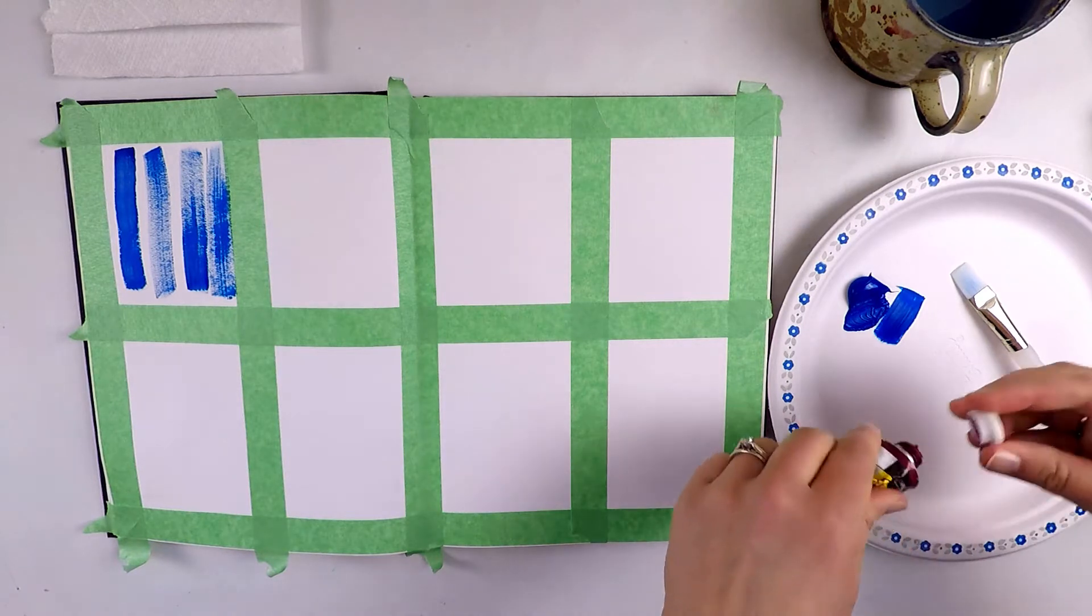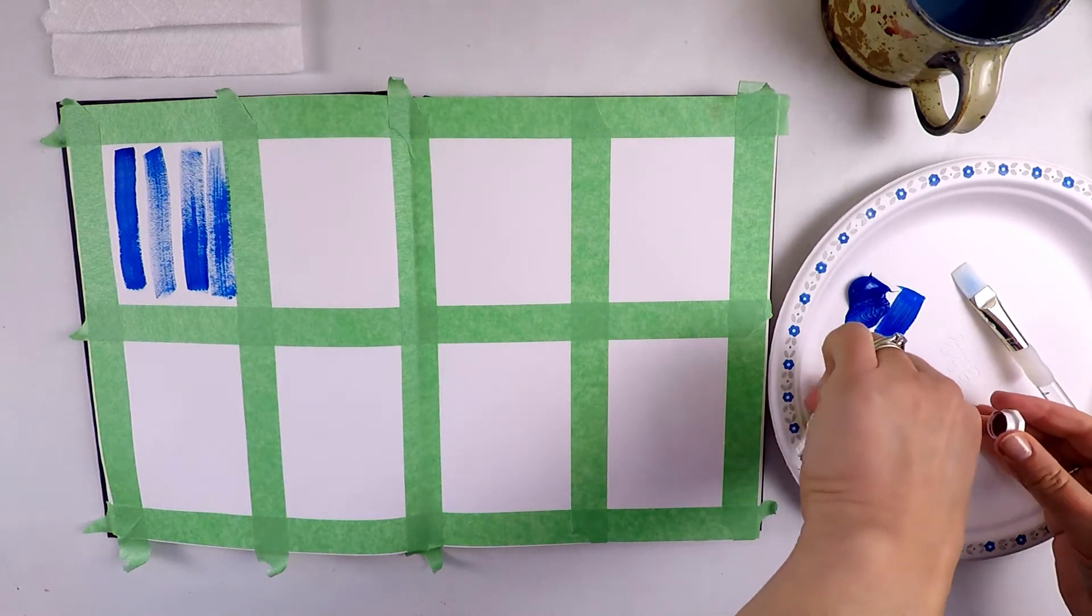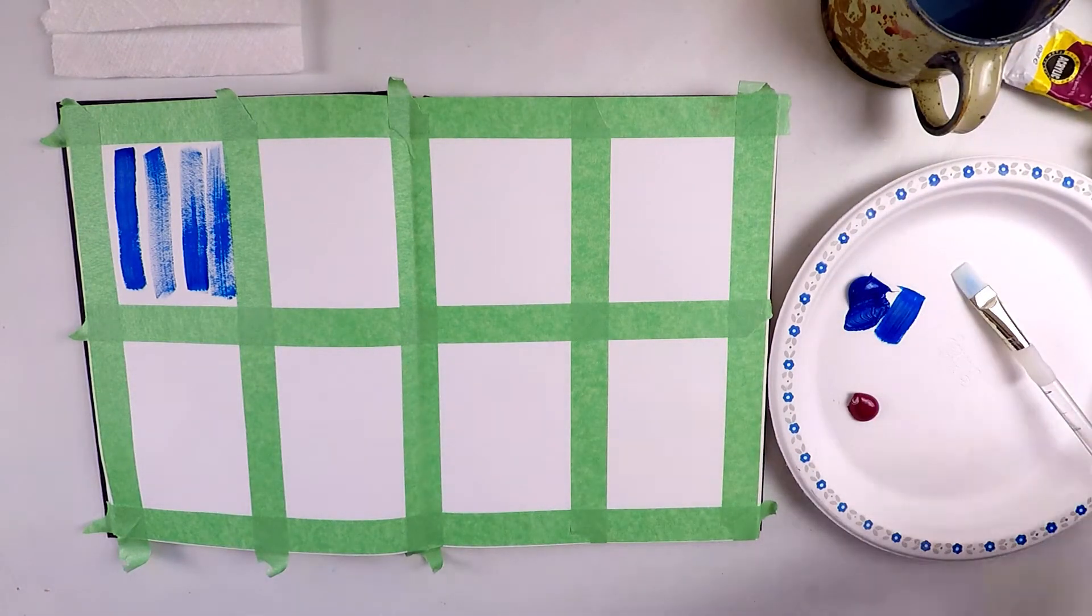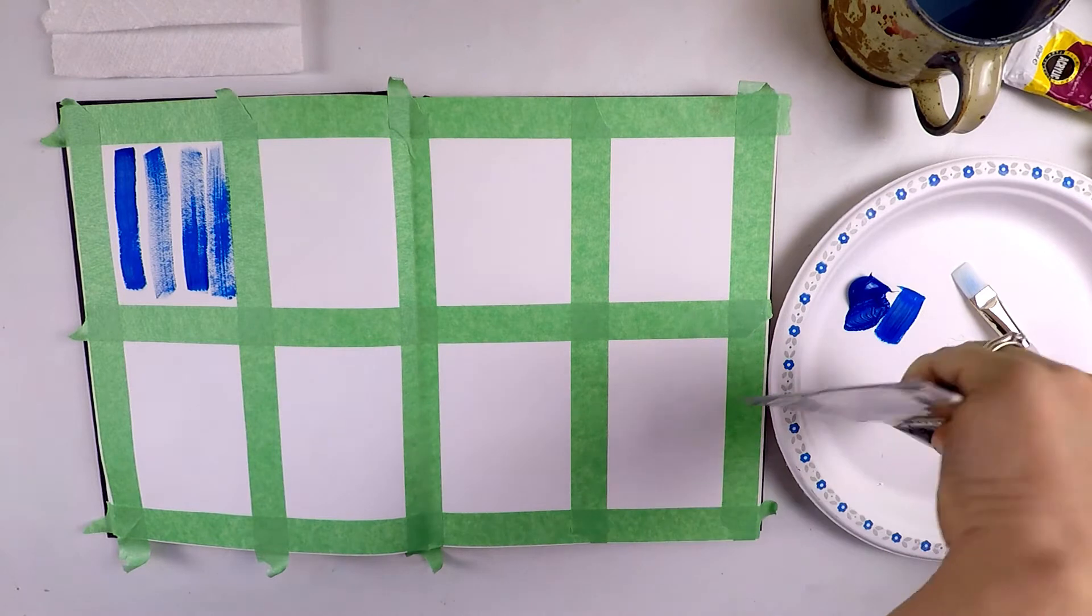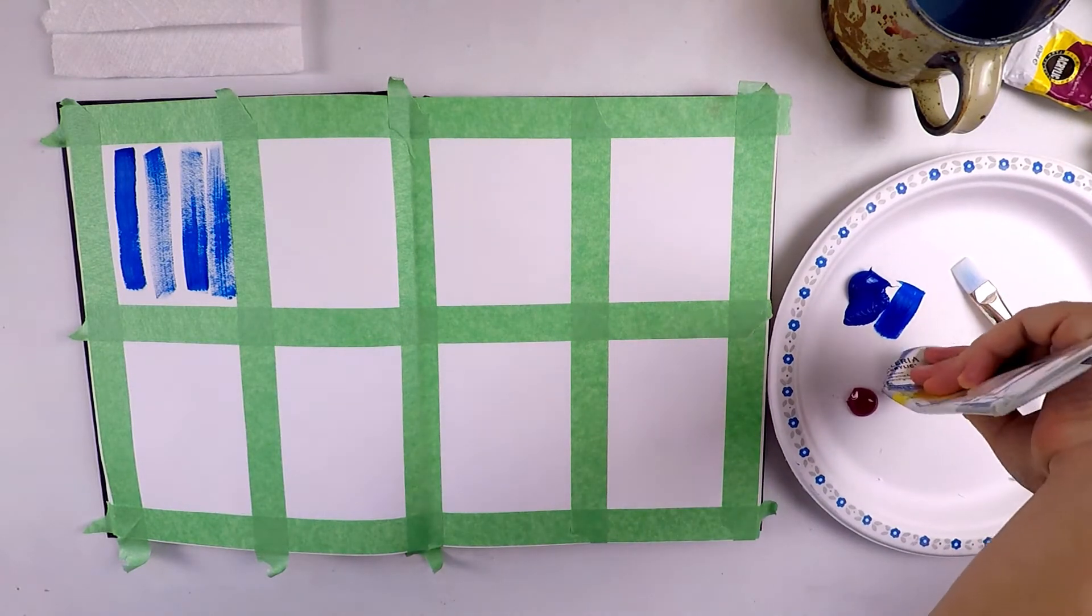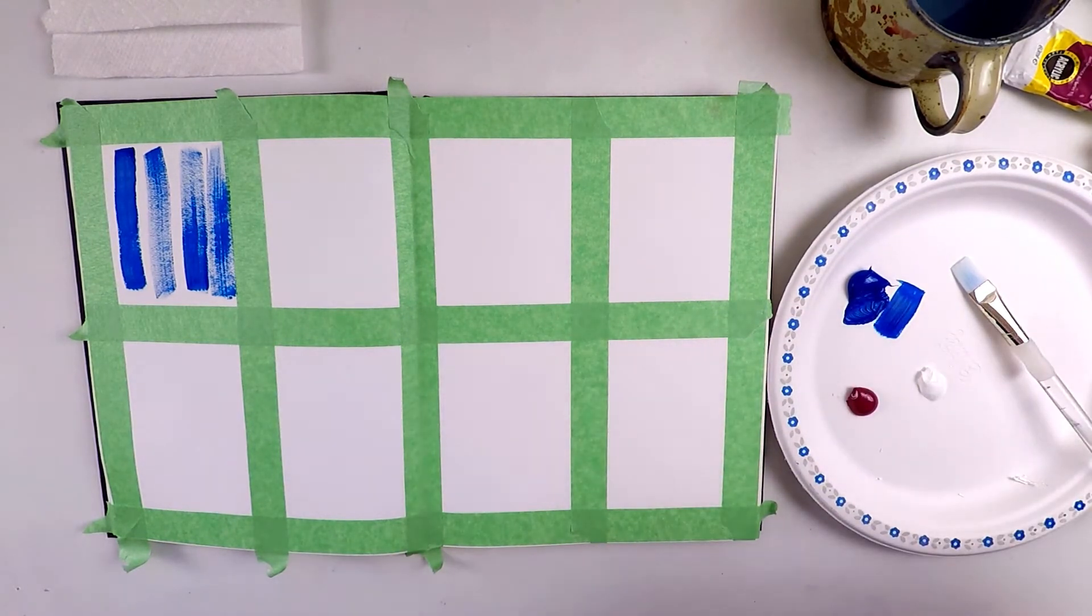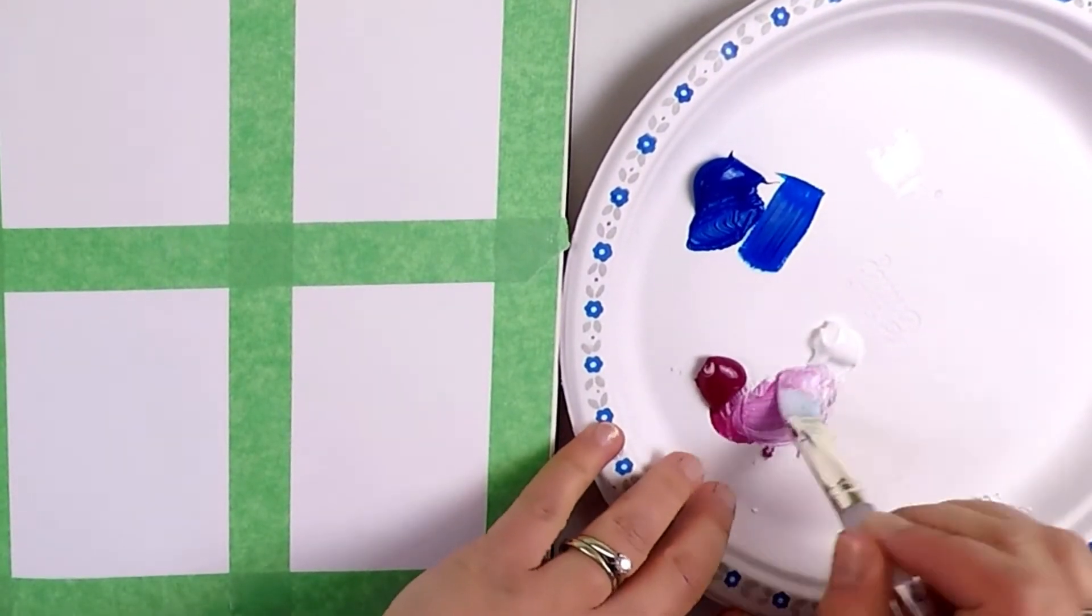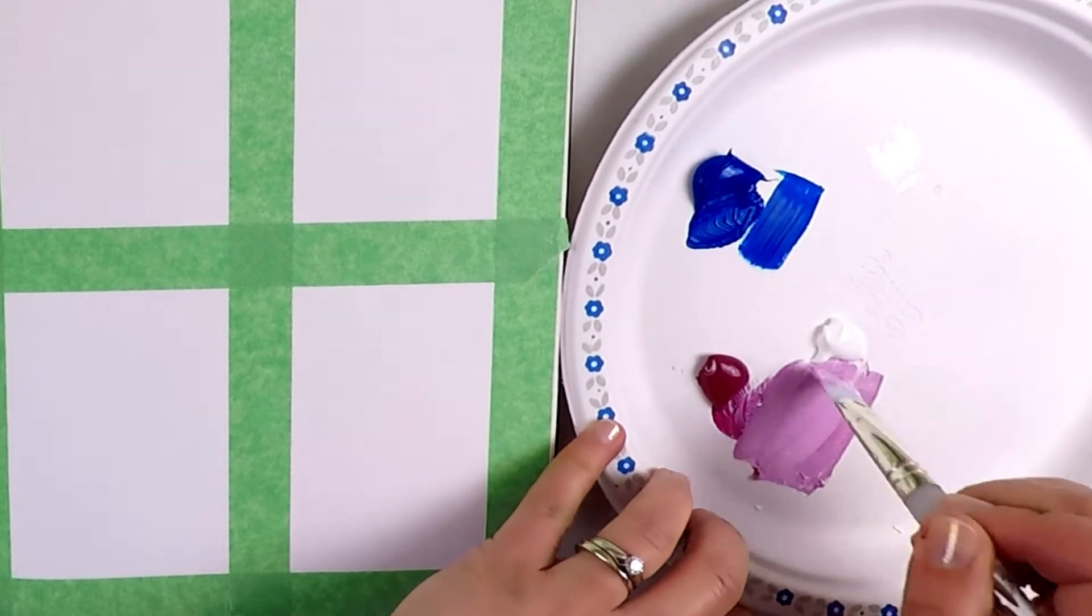Notice how I separate the blobs of paint on my palette. When I want to mix a color I take some paint from each blob and pull the colors together. This way I have the ability to tweak each mixed color one way or the other. Acrylic paints dry quickly so it's good practice to mix colors on the palette and not on the paper or canvas.